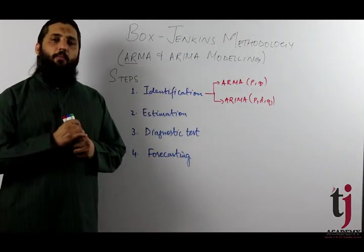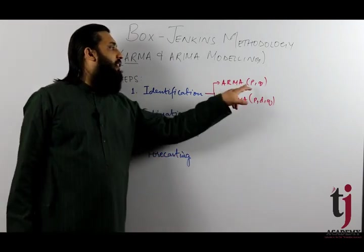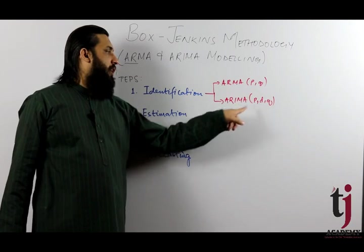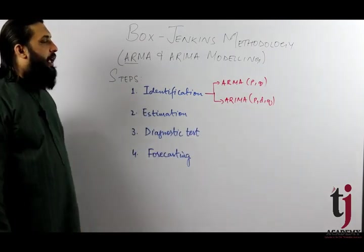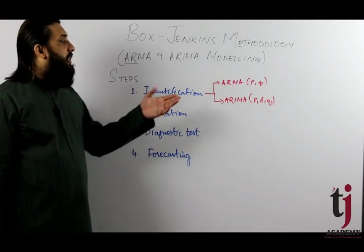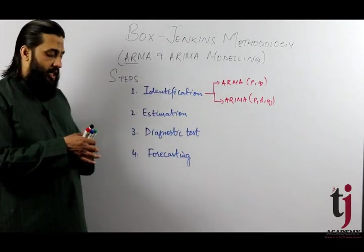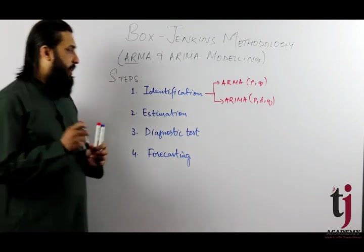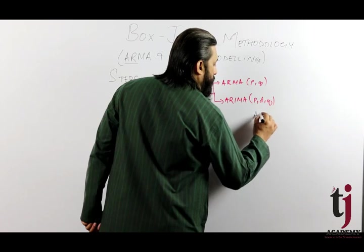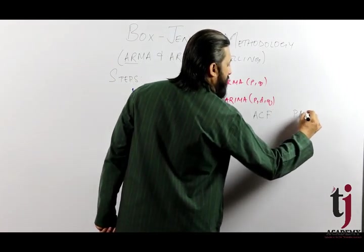The important question here is: how many AR lags (order p), how many MA lags (order q), and how many differences (d)? How can we determine p and q? How can we see the values of p and q?